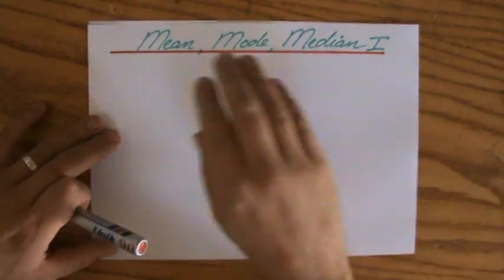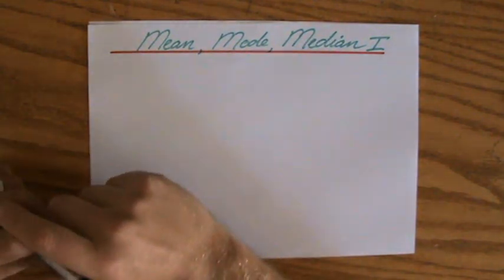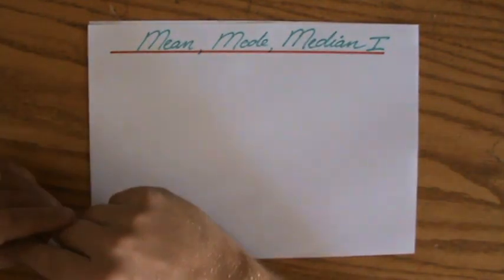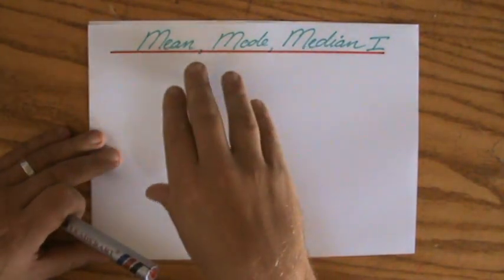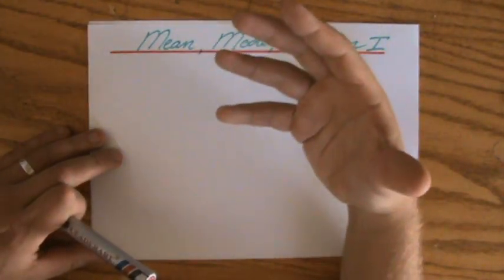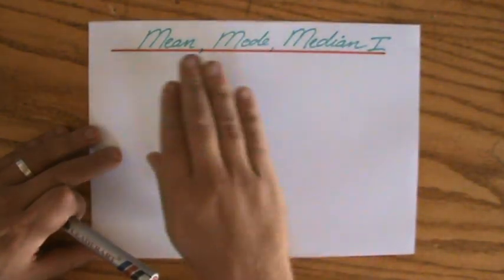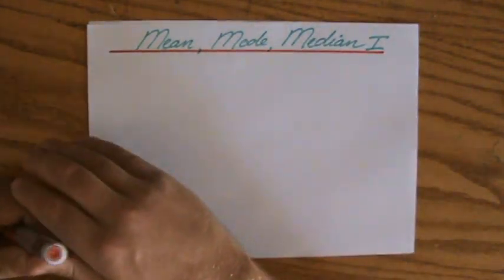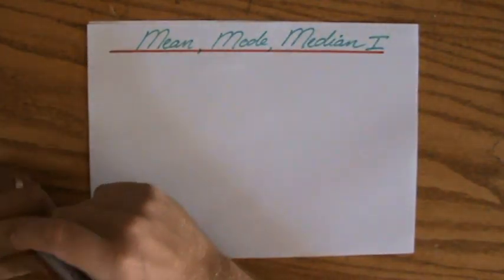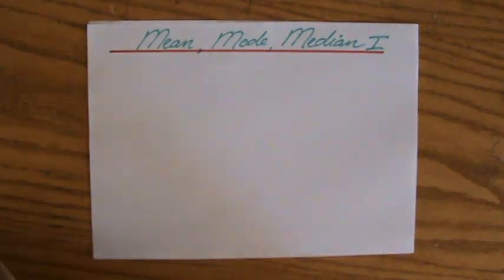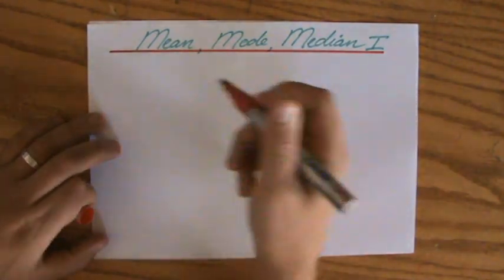This video is going to talk about the mean, mode, and median, and I will also quickly discuss what is meant by the range. An important thing to realize is that the mean, mode, and median all say something about the average of a set of data. Sometimes it's better to use the mean, sometimes the median, sometimes the mode. We'll talk about which one to use best in the next video — for now, let's explain what they are.